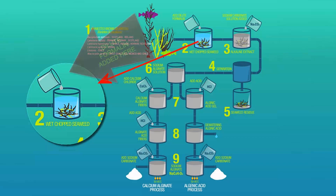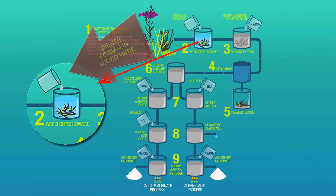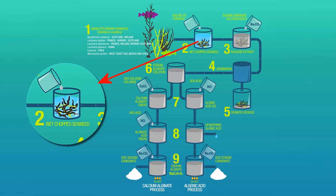Dilute formalin is added to each batch of chopped seaweed. This is a solution of formaldehyde containing a small amount of methanol. This chemical causes the seaweed to swell up.